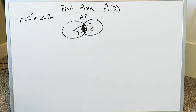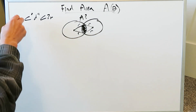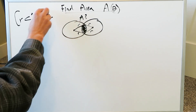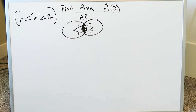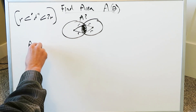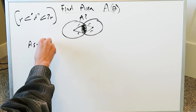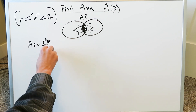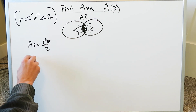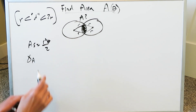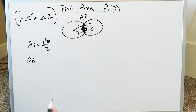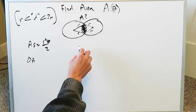Remember, everything here is subject to the constraint representing a reasonable amount of overlap of two circles having equal dimensions. We know the area of the sector is always equal to r squared theta over 2, so that part is done. Now we have to find the area of the triangle.